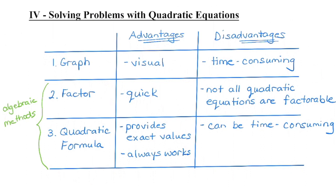There are three different ways we can solve a quadratic equation. We're going to look today at some different types of problems where you can apply those skills. To quickly recall, we can solve a quadratic equation by graphing and getting those x-intercepts, by factoring, setting the factors equal to zero and solving for x, or by using the quadratic formula.